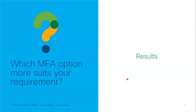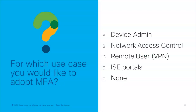The question for the previous poll was: which MFA option suits your requirements? We had a good mix of responses, but push took the number one spot. The next top answer was soft token as the MFA option that suits our audience's requirements. That's no surprise — it's one of the easiest and most widely deployed. We have another poll: for which use case would you like to adopt MFA? The options are device admin, network access control, remote user VPN, ISE portals, or none.